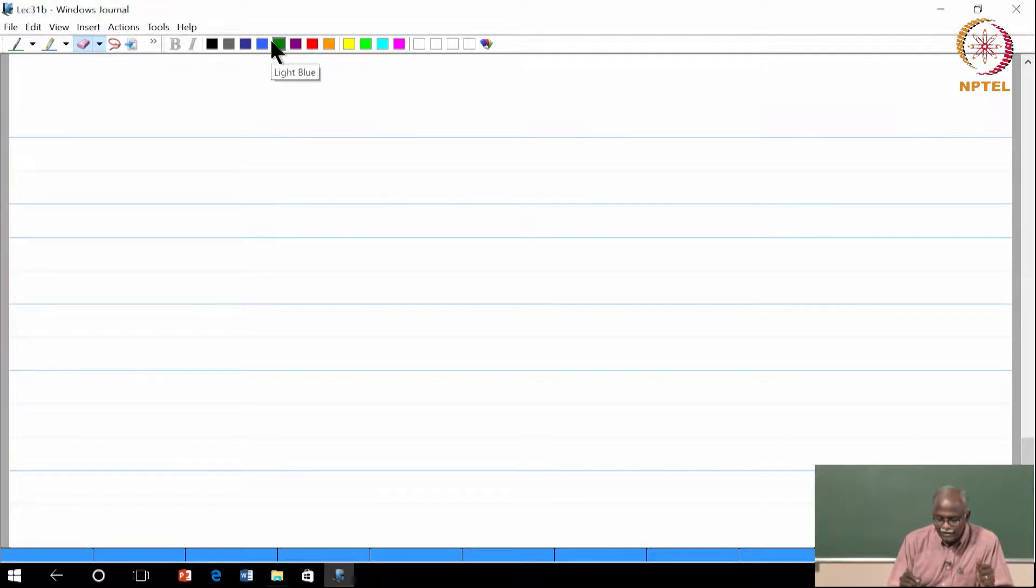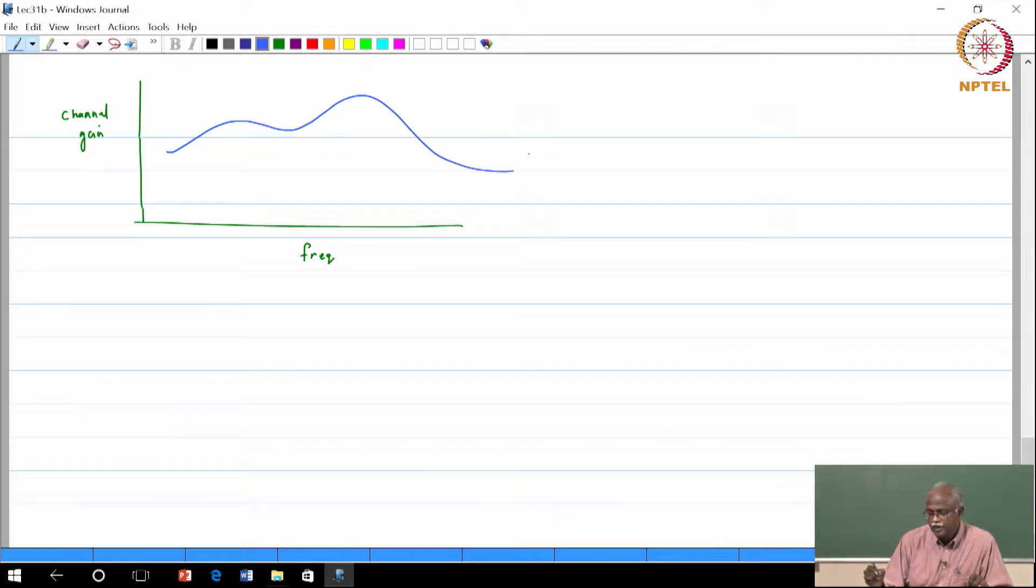So the visualization of such a channel - this is frequency. So you think of the channel frequency not as being constant. This is the channel gain. A frequency selective fading channel basically says that there is some variation in the gain across the frequencies.